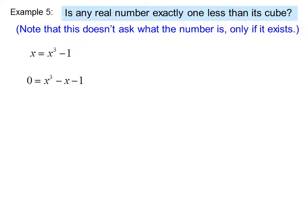If we subtract x from both sides, this becomes 0 equals x cubed minus x minus 1. Once again, is there a value of x that will make this true? We rewrite this as a function, f of x equals x cubed minus x minus 1. So what we're looking for is an answer to the question, is there a value of x that will make f of x equal 0?